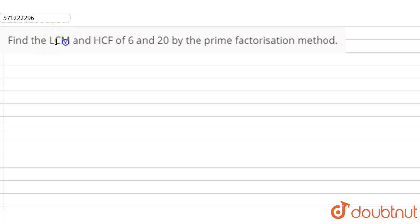Hi students, in this question we have to find the LCM and HCF of two numbers that is 6 and 20 by prime factorization method. Prime factorization is the method of expressing a natural number as a product of prime numbers.